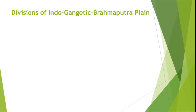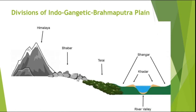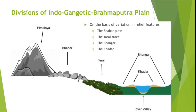Now, let's have a look into the divisions of the North Indian Plain. This is the diagrammatic representation of the cross section of the North Indian Plain. On the basis of variation in relief features, the North Indian Plain or the Indo-Gangetic Brahmaputra Plain is divided into four: the Babar, Tarai, Bangar, and the Khadar.